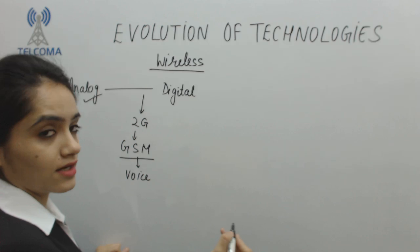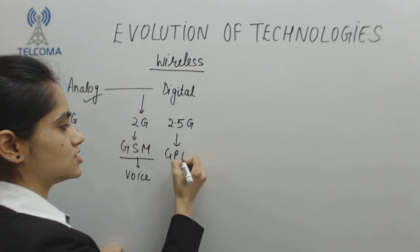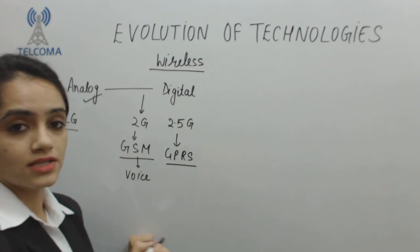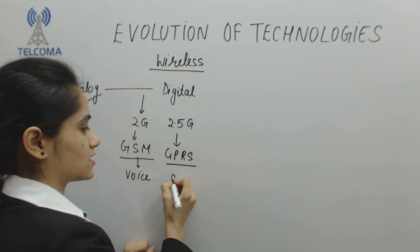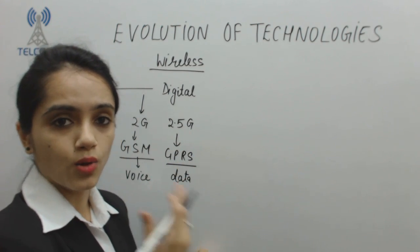Next we require data. So we have a next which is 2.5G and we name it as GPRS, General Packet Radio Service, which is a data technology. But the data rate is very low.